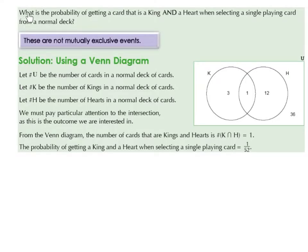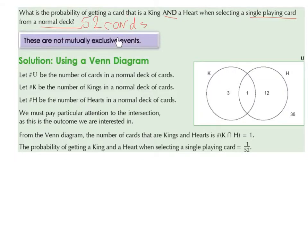What is the probability of getting a card that is a king and a heart when selecting a single playing card from a normal deck? Remember that a normal deck has 52 cards. These are not mutually exclusive events. So let's have a look at a solution using a Venn diagram.